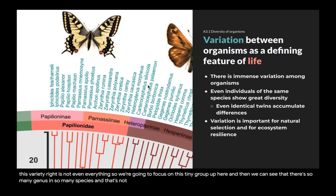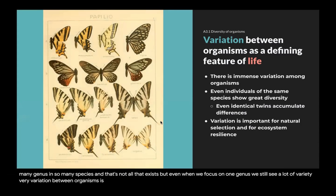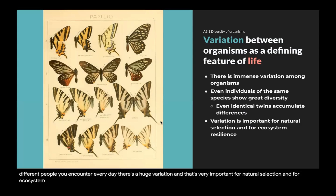And that's not all that exists. Even when we focus on one genus, we still see a lot of variety. Variation between organisms is a defining feature of life. There is immense variation — even within one species. Look at how many different people you encounter every day. There's a huge variation.